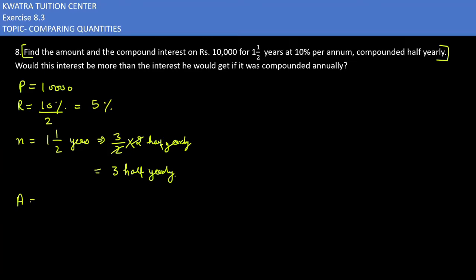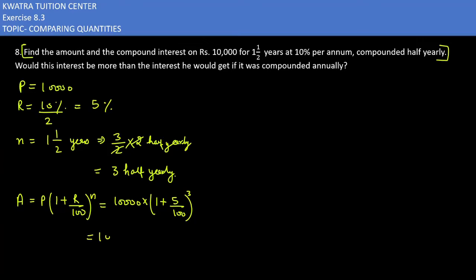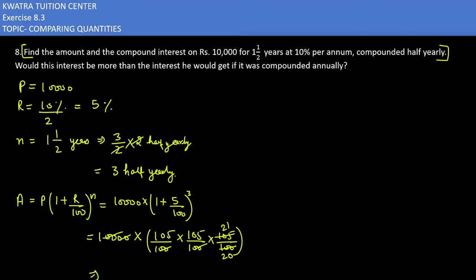Now we apply the amount formula: Amount = Principal × (1 + r/100) raised to n. So it is 10,000 × (1 + 5/100) cubed, which gives 10,000 × (105/100) cubed. We can cancel two zeros with two zeros, leaving 105/100, and then simplify: 105 over 100 becomes 21 over 20, and further simplifies with 5, giving 21 over 4.